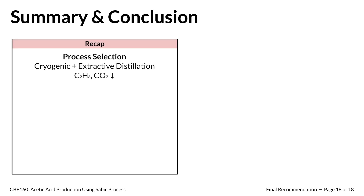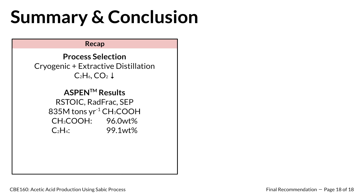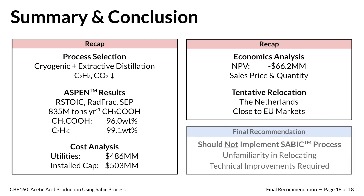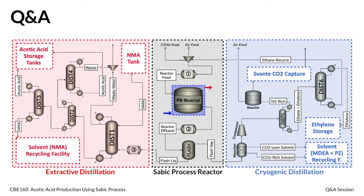To recap: our company identified an opportunity to implement the Stabic process for acetic acid production. Our team designed a process using cryogenic and extractive distillation to annually produce 835,000 metric tons of glacial-grade acetic acid and high-purity ethylene. Unfortunately, due to high utilities and installed capital costs, we calculated a negative NPV. While our company could consider relocating the Stabic process to the Netherlands, as the NPV is very sensitive to sales pricing and quantity, our team recommends not implementing the Stabic process until further relocation options are investigated and significant technical improvements are made. The risks of implementing the Stabic process currently outweigh the opportunities. Thank you for listening to our presentation — we can now open the floor to questions.